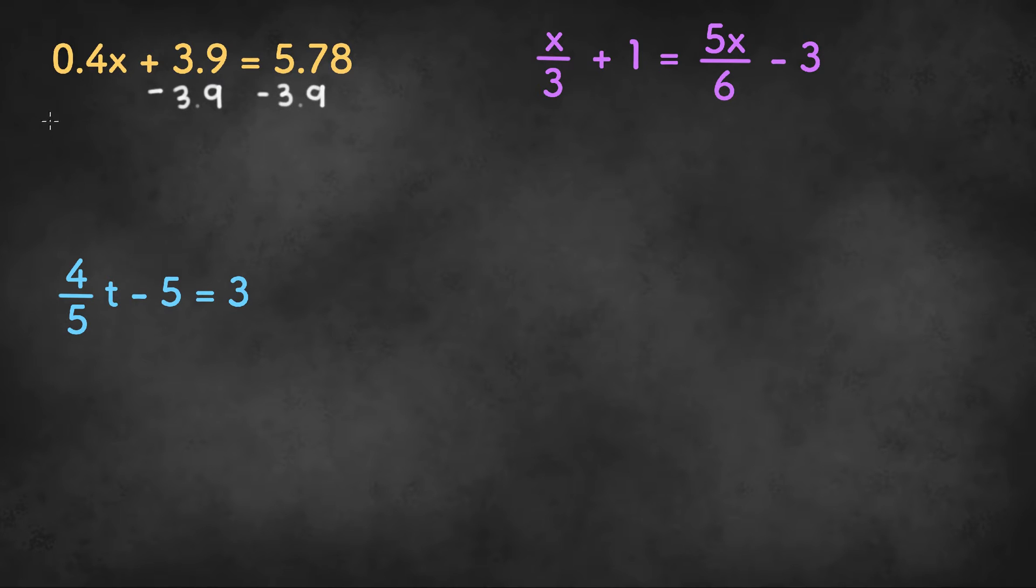Once we do that, we will get 0.4x on the left hand side, and we need to subtract 5.78 by 3.9 on the right hand side to get 1.88.